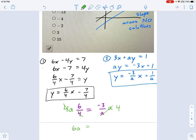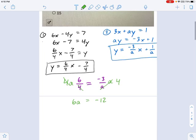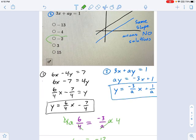So what we have here is 6 times a equals negative 3 times 4. That's negative 12. And that means a equals negative 2. This produces no solutions in my system of equations. Take a look here. Yep, there it is. A equals negative 2.